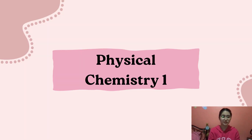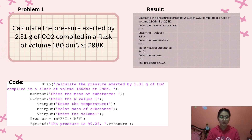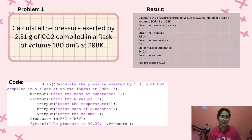Moving on to our third course, which is Physical Chemistry 1. The first problem is: calculate the pressure exerted by 2.31 grams of carbon dioxide compiled in a flask of volume 180 cubic decimeters at 298 Kelvin. You enter the mass, which is 2.31; the R value, which is 8.314; the temperature, which is 298; the molar mass, which is 44.01; and the volume, which is 180. The pressure would be 0.72.